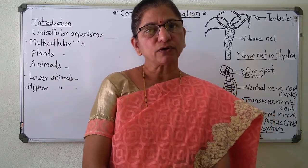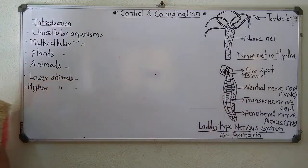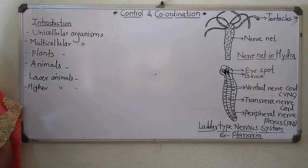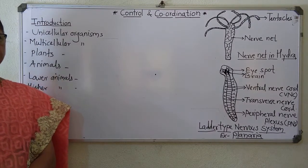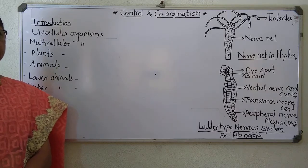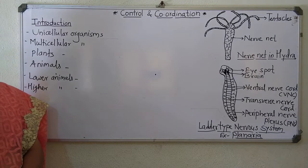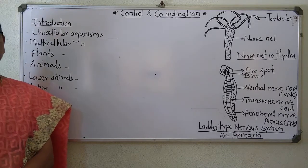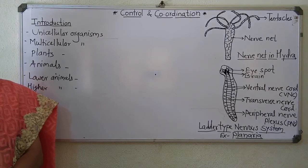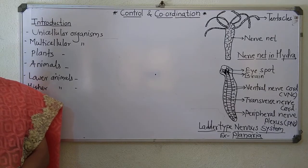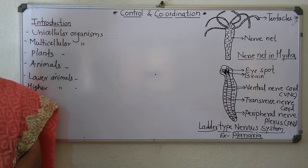First of all, we will go to the introduction of our topic. You are well aware that the living organisms, especially plants and animals, as well as in unicellular as well as in multicellular organisms, there is a control and coordination of different life activities.